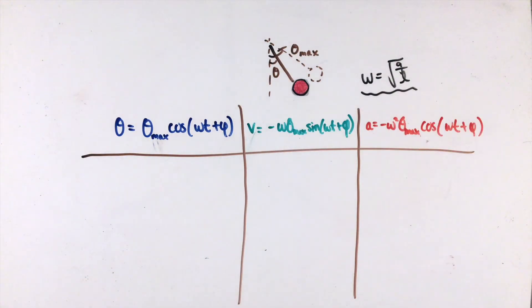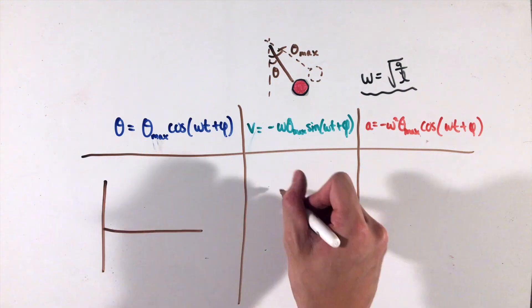Finally, this angle phi here acts to express the starting position of the pendulum, but will be zero in almost all the cases you'll come across in AP Physics 1, so don't worry about that.